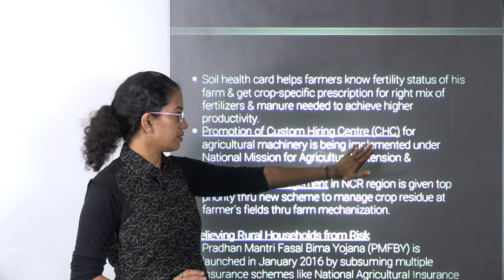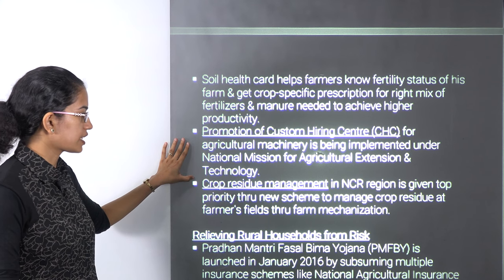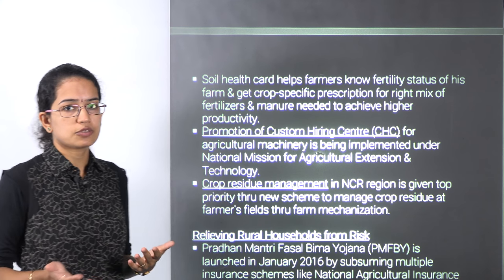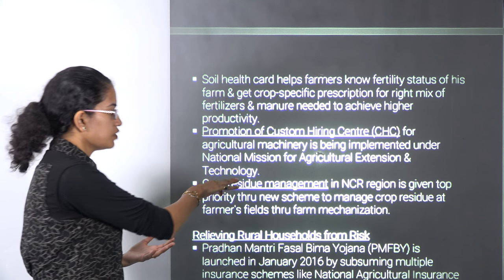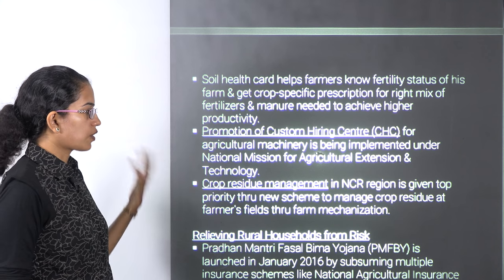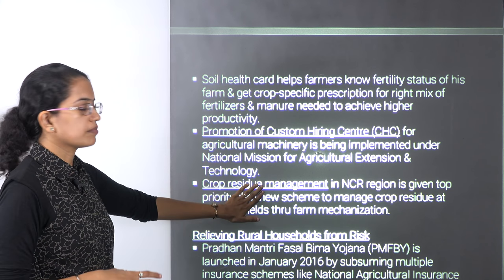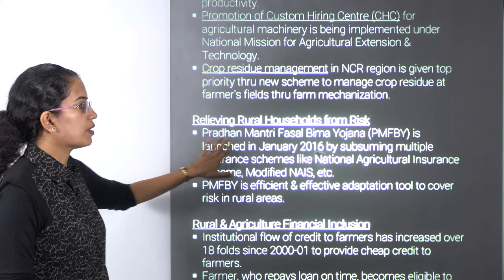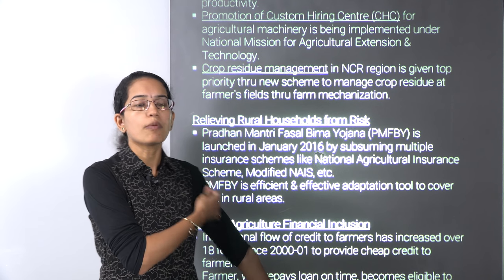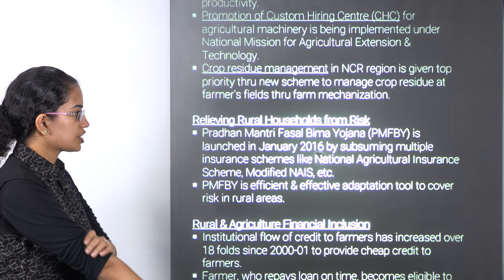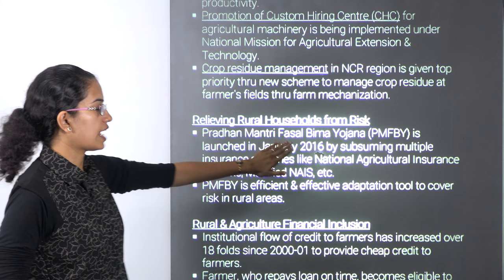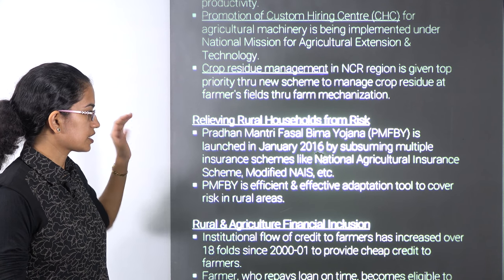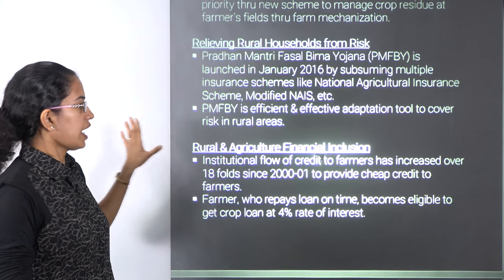We have the promotion of custom hiring centers for agricultural machinery. A new scheme is crop residue management, which talks about crop residue at the farmers' field and its management through farm mechanization. We are also talking about the Fasal Bima Yojana — the crop insurance scheme launched in 2016 — which subsumed various other schemes like the National Agricultural Insurance Scheme, the modified NAIS scheme, and so on.